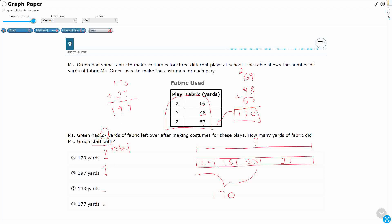So how can I be sure? Well, let's go back and I'm going to say leftover. I'm going to add to this table because you see this quantity right here. I could really just add this to this table and say 27, right? That's my total: 69 for play X, 48 for play Y, 53 for play Z, and then 27 leftover after making the costumes. And so how much did I start with? Well, let's just take those and let's add them all up. I know I already did the 170, but I just want to double check. So 69, 48, 53, 27.